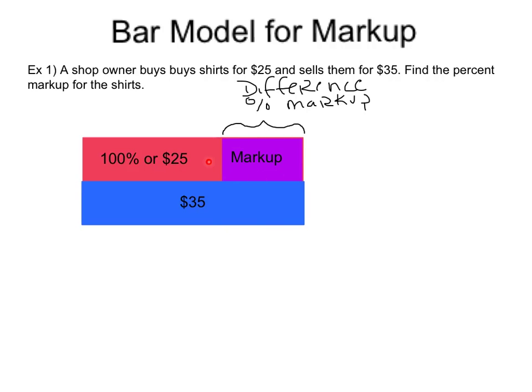This purple value — the markup — is going to be the difference between the amount they buy the shirt for and the amount they sell the shirt for. This is what we call the percent change or the markup percent.